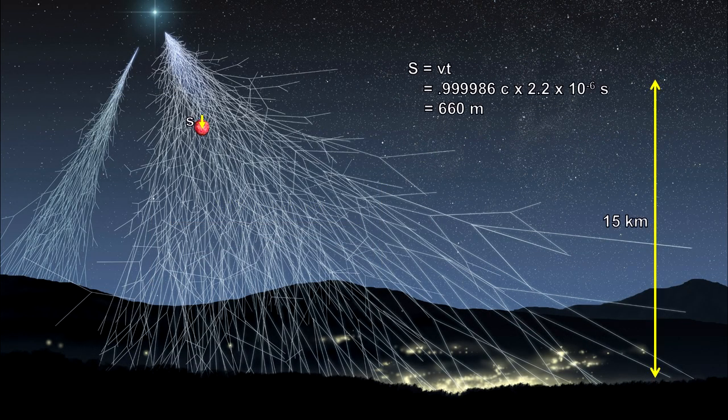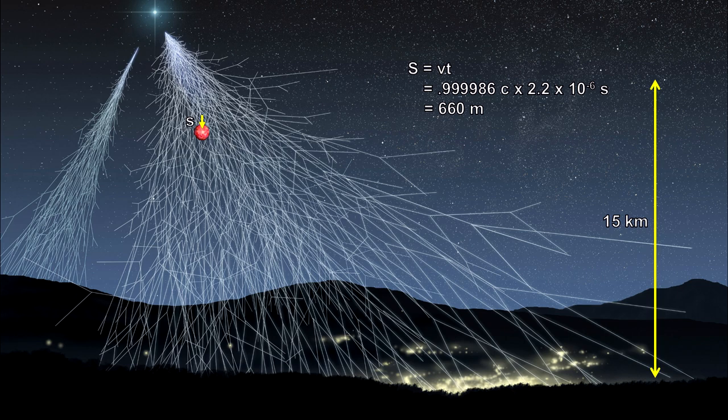Traveling at near the speed of light, half the muons would decay with each 660 meters traveled. That would leave few, if any, reaching the Earth's surface, 15 kilometers away.